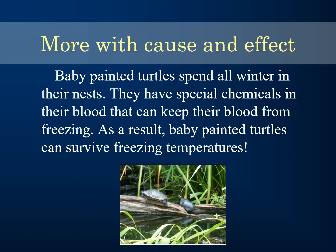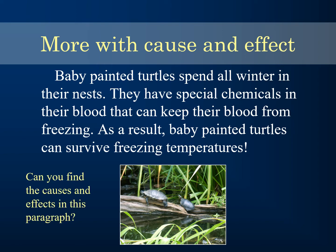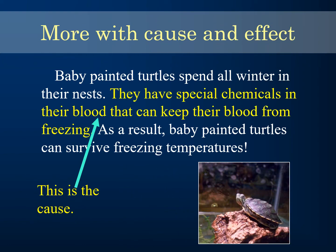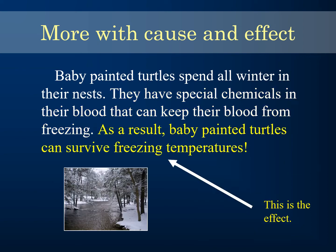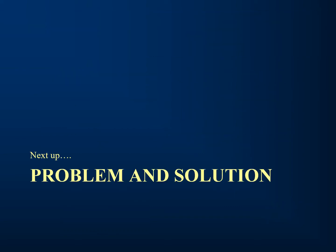Here's another cause and effect example: 'Baby painted turtles spend all winter in their nests. They have a special chemical in their blood that keeps their blood from freezing. As a result, baby painted turtles can survive freezing temperatures.' The cause is having special chemicals in their blood, and the effect is that they can survive freezing temperatures and stay safe through the winter.